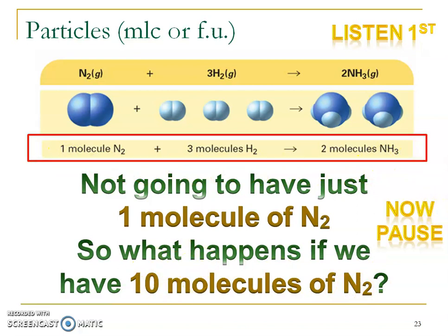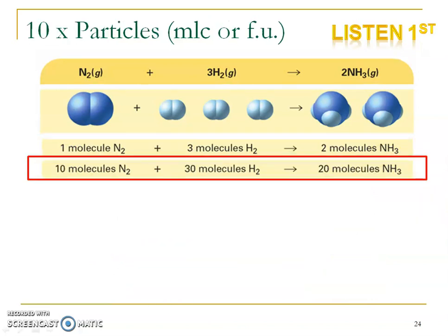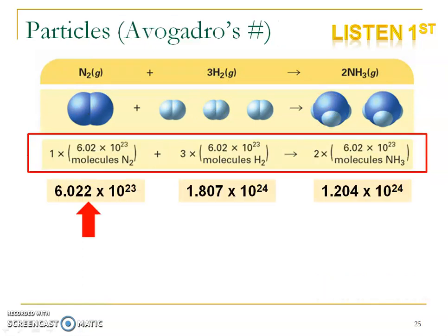Now let's talk about particles. Here we have particles: one molecule of nitrogen, three molecules of hydrogen, and two molecules of ammonia — those are the coefficients. You're never going to have just one molecule of nitrogen or three molecules of hydrogen; you'll want molecules in bulk. Pause and write this information down. If we have 10 molecules, we multiply all of our coefficients by 10, just like with the tricycle — if you wanted 10 tricycles, you'd multiply all parts by 10. So 1×10, 3×10, and 2×10. Particles are also represented by Avogadro's number — I use 6.022. So 1 times Avogadro's number, 3 times Avogadro's number, and so on. Pause and write those numbers in.